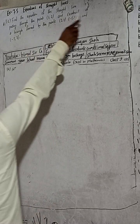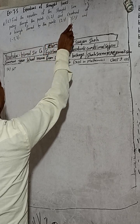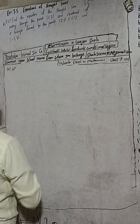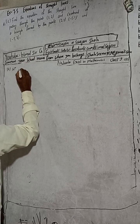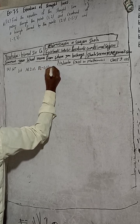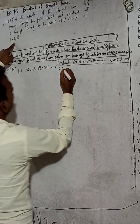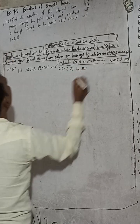Hi class 9 and 10 students, welcome back to Bimalsarji YouTube channel. This is question number 11c, exercise 7.5, equations of straight lines, class 9 optional mathematics. The question is: find the equation of the straight line passing through the point (1, 2) and the centroid of a triangle formed by the points (2, 1), (-5, 1), and (-3, 7). Let A = (2, 1), B = (-5, 1), and C = (-3, 7).